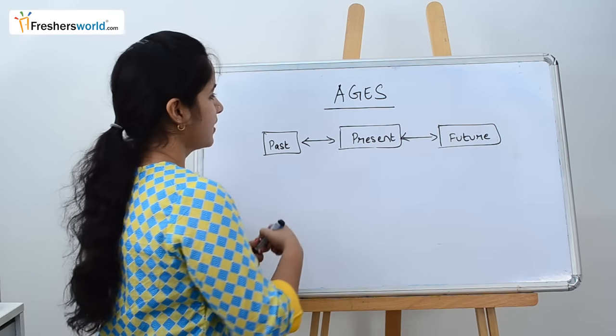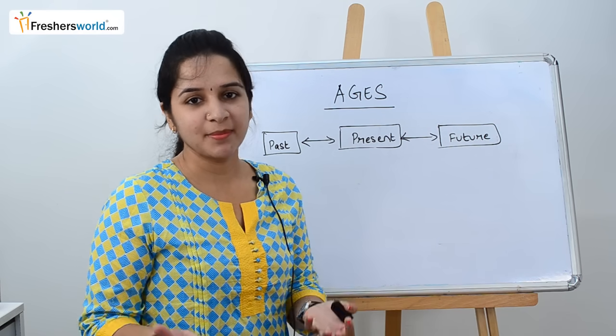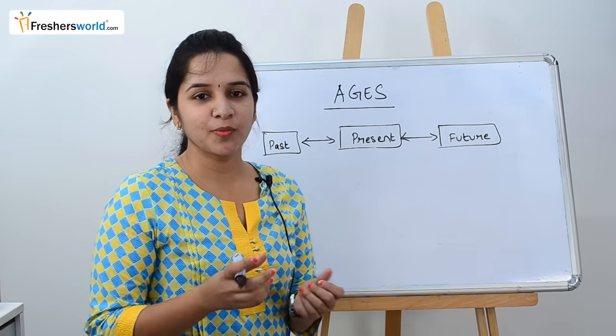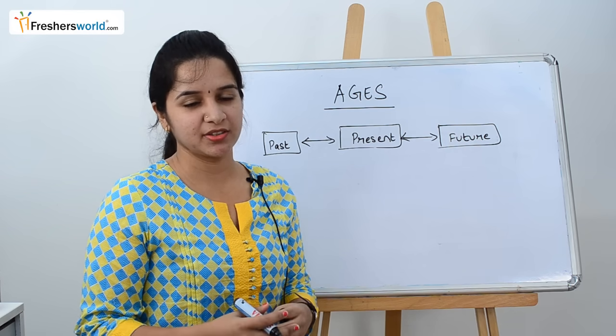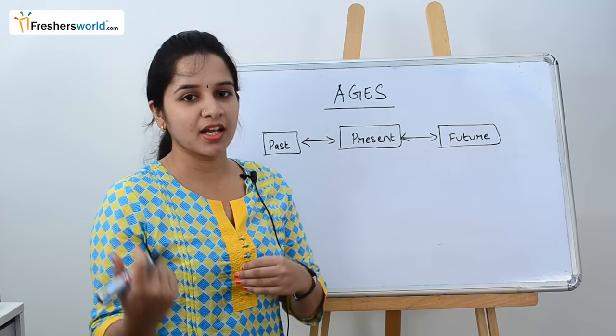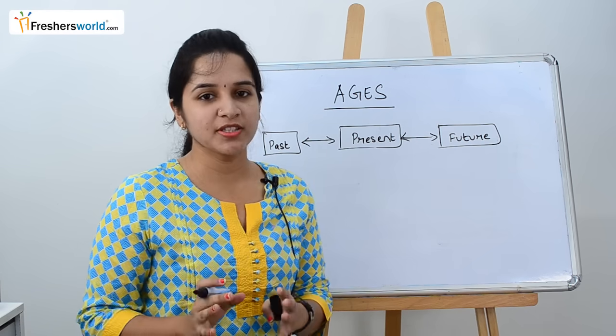The general concept of problems you will face is, let's take Ram as an example. Ram is so many years at present, then how old will he be after 15 years or 15 years ago. This is a common type of problem. To understand that, there are four concepts you should know.